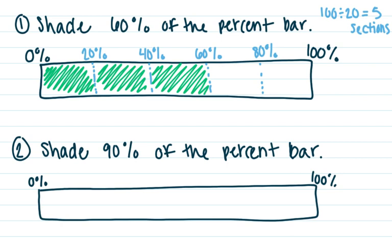Alright, on our last one here, shade ninety percent of the percent bar. So again, I'm trying to think of a number that I can count by that will go into ninety and to one hundred. For this one, I'm thinking the best number is probably going to be ten.